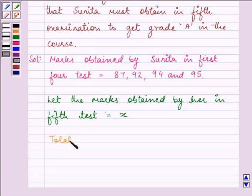Total marks will be equal to 87 plus 92 plus 94 plus 95 plus X, which is equal to 368 plus X.